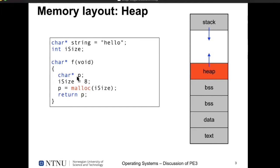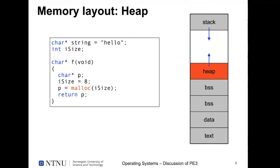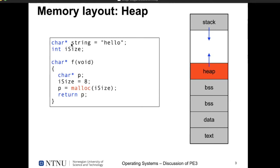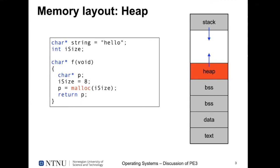A character pointer only holds an address, not the contents. When you write something like 'char *string = "hello"', the compiler allocates memory for the string 'hello' somewhere and stores its start address in the pointer variable. The assignment only reserves space for the pointer itself. Whatever you store there is stored somewhere else in memory.